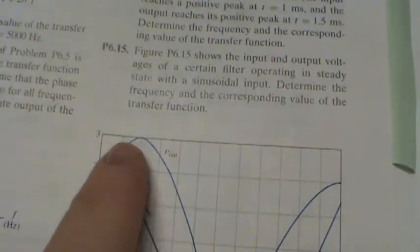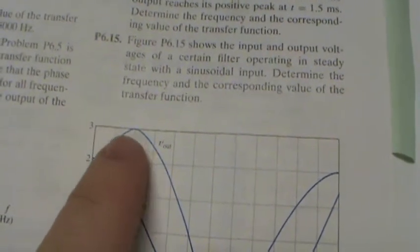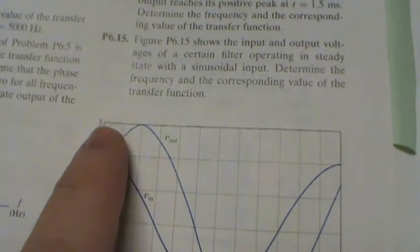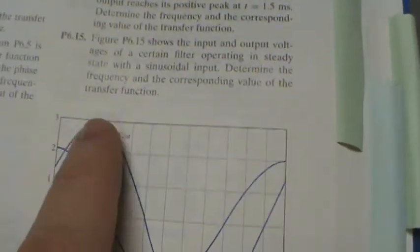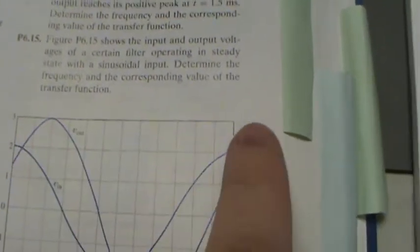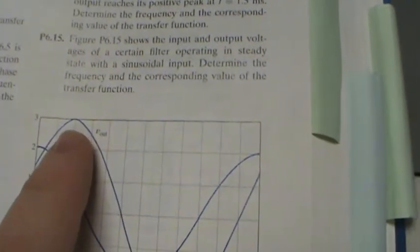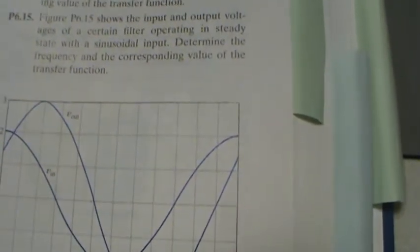To find the phase difference between those two waveforms, you look at the difference in their horizontal distance for their peak. You call that lowercase Greek letter delta. You find the period, which in time is the wavelength, though it's kind of odd.